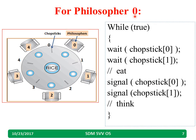Consider philosopher 0. The structure is: while true — wait for chopstick 0, wait for chopstick 1. Philosopher 0 waits for chopstick 0 and chopstick 1. Once both are obtained, he or she can eat. Once eating is over, they put the chopsticks back: signal chopstick 0, signal chopstick 1. Then they start thinking again.